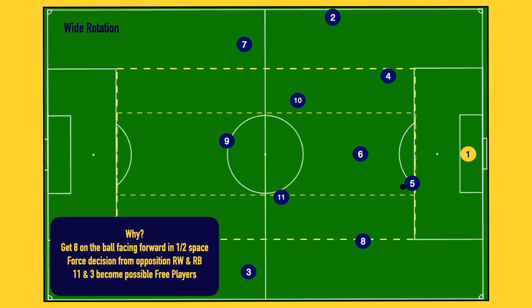The reasoning is: can we get the eight on the ball facing forward in the half space? Typically in my teams I would rather have my eight or my ten on the ball versus a center back driving my attack, forcing a decision from the opposition's right wing and right back. In a man marking approach, who are they going to follow? Where do they trade off? In that exchange, do we create a free player in the eight, the three, or the eleven — and obviously the addition of the eleven and three becoming free based on that movement alone.